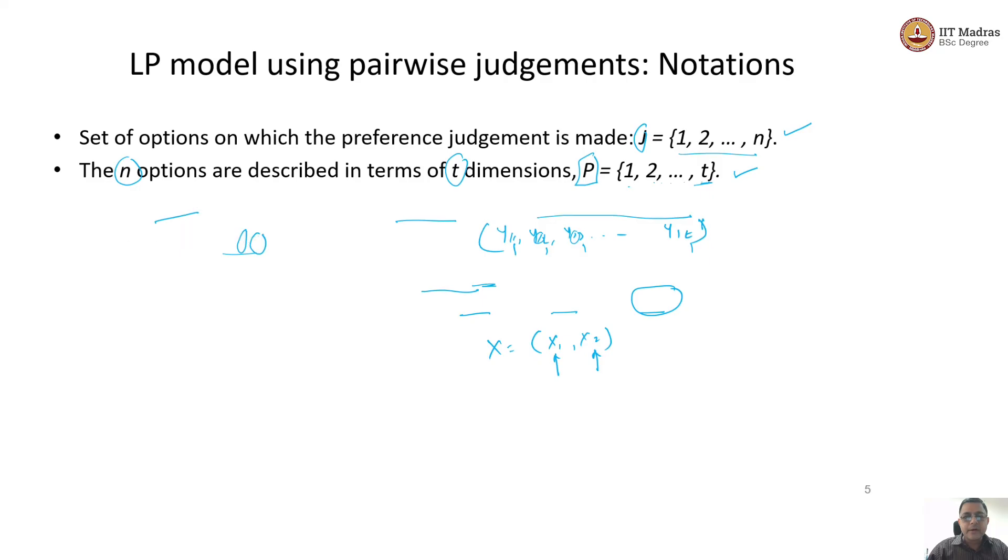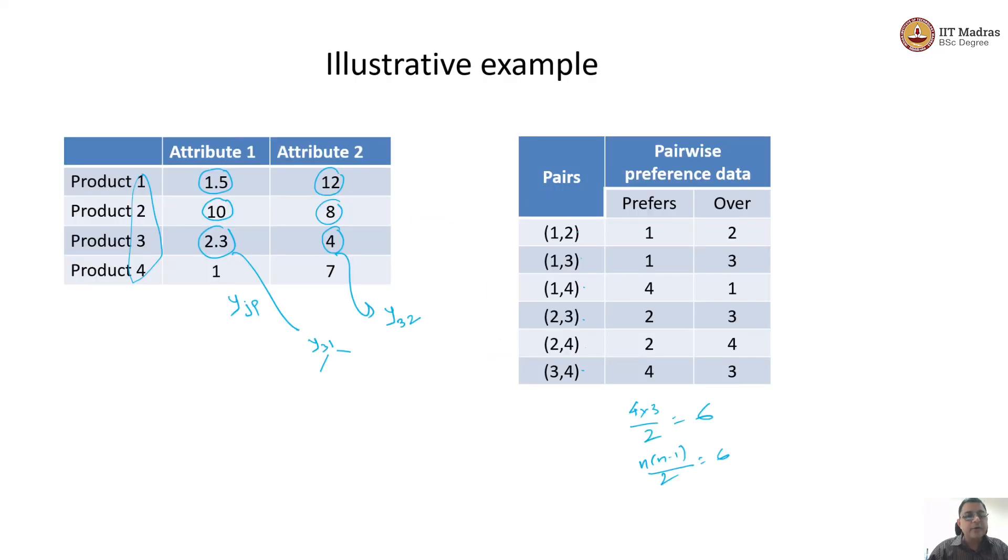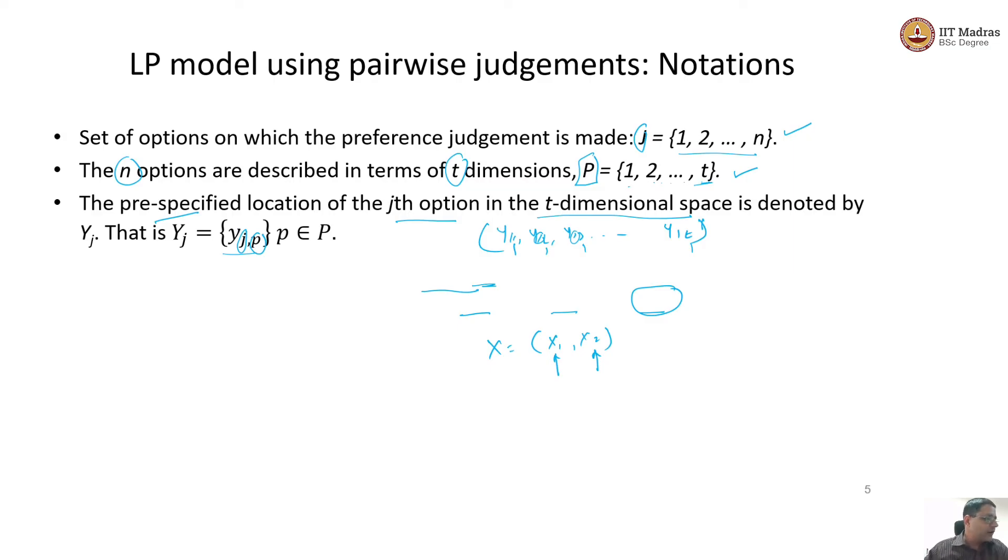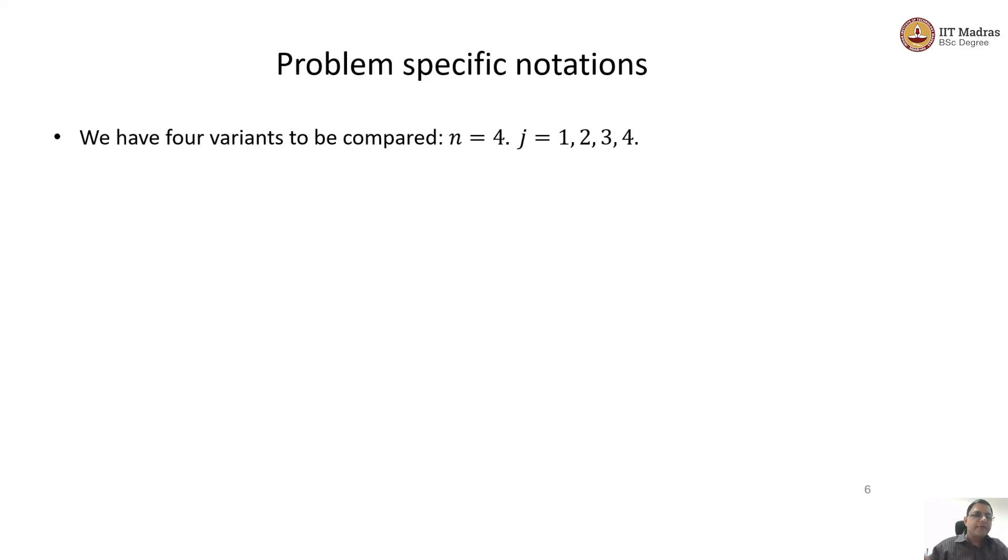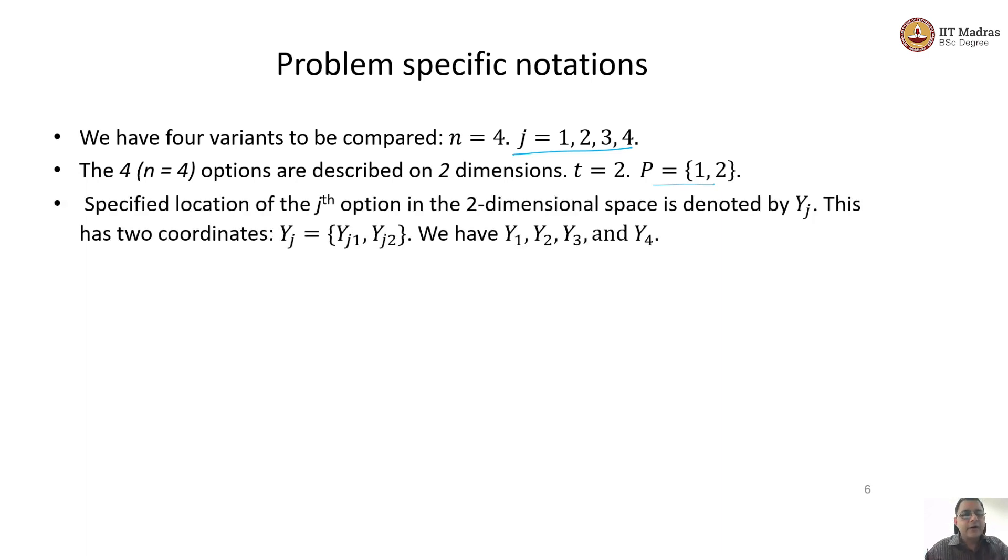Let us translate that to the problem data. We have data for 2 attributes, 4 variants and we have pairwise choices. What is N for us? N is actually 4 for us. What is T? T is 2 for us. For us N is 4, there are 4 product variants: 1, 2, 3 and 4. There are 2 dimensions, T is actually 2. P is 1 and 2. Therefore, we are going to have specified locations on 2 dimensions for each of the options. Yj1 and Yj2. For Y1, we will have Y11 and Y12. Y2 essentially is going to give us Y21 and Y22. For each of the 4 options, I have their coordinates. These are the 2 dimensional coordinates. And what I wish to find out? I wish to find out the ideal point for this consumer as X1 and X2.